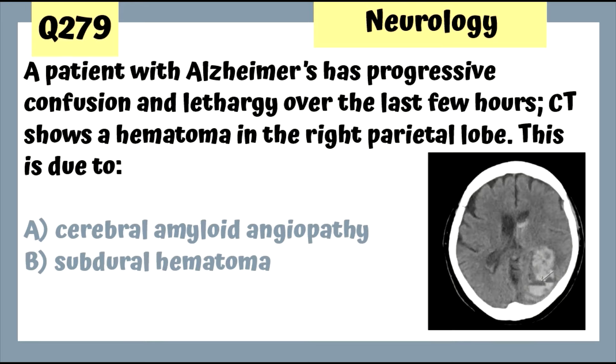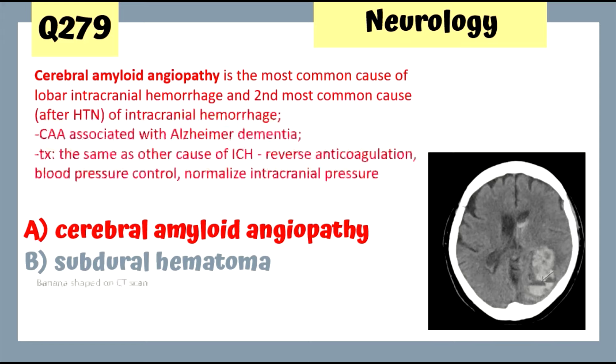Question 278: A 73-year-old with hypertension has intermittent transient right eye vision loss described as a curtain coming down over the eye. A neck ultrasound will reveal the diagnosis — she likely had amaurosis fugax due to retinal ischemia from an atherosclerotic embolus originating from the ipsilateral carotid artery. Question 279: A patient with Alzheimer's has a hematoma in the right parietal lobe — assume this is cerebral amyloid angiopathy.